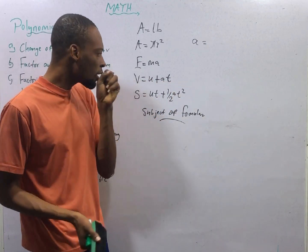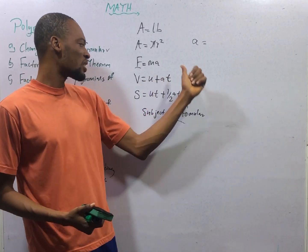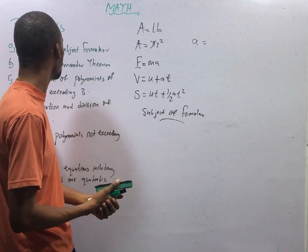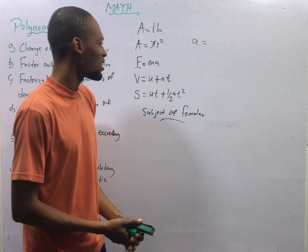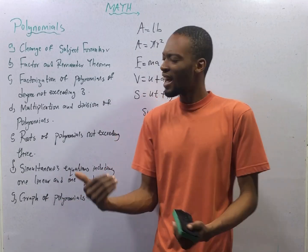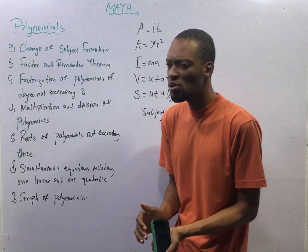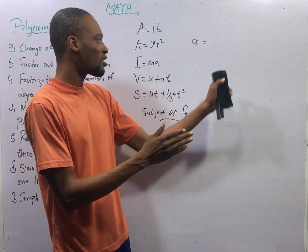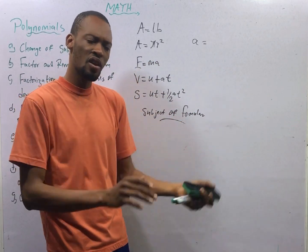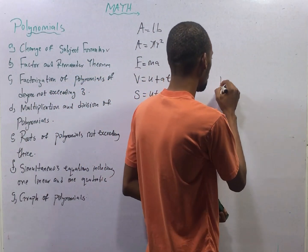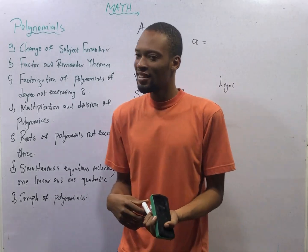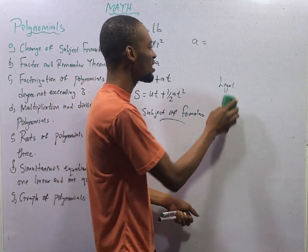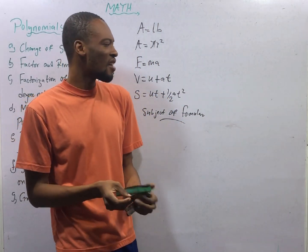If I say find initial velocity, we definitely have to bring initial velocity out so that it will be equal to every other thing. To change subject formula, you do everything possible to make sure that the one you are changing to is standing alone when every other thing goes the other side of the equation. And doing so, you must make sure that it is legal, because there are illegal ways people change subject formula. If you don't do it legally, you get the wrong answer. In mathematics, things are not done anyhow. We do things the right way and there are rules you must follow to change subject formula.